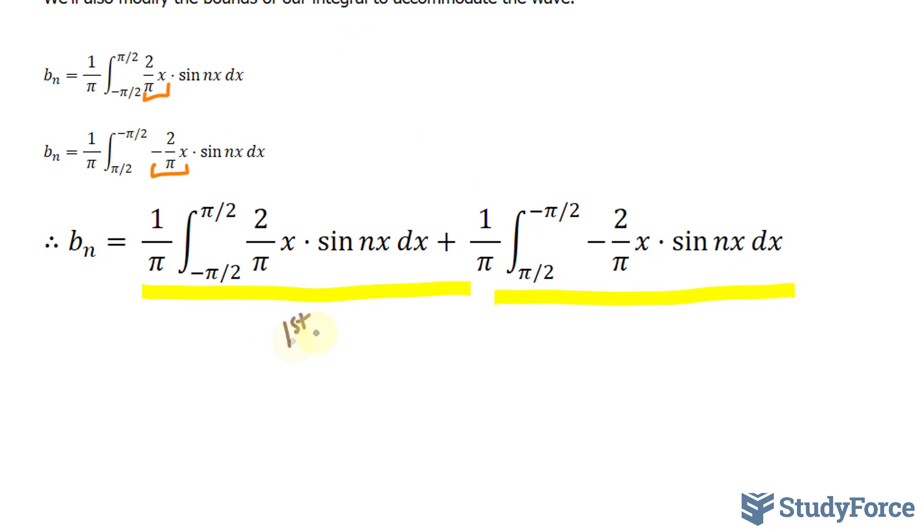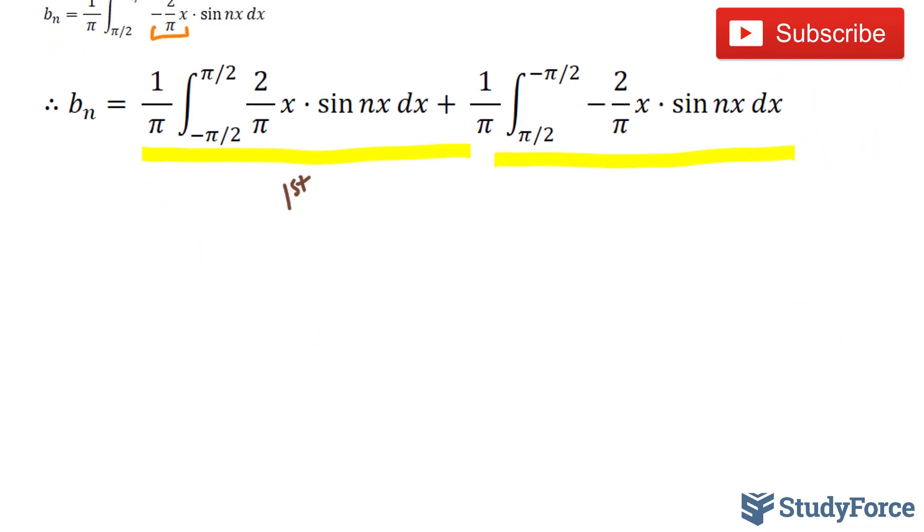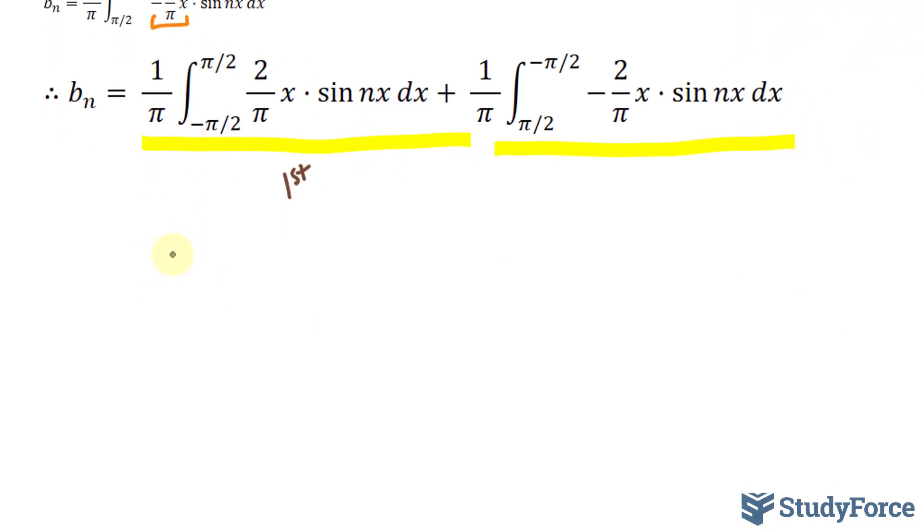I'll start with the first term. If you integrate this correctly, and recall that to integrate this function, you'll need to use integration by parts. I don't want to go through the whole process of integrating, so I have come up with the answer for you. The answer to this integral is 2(sin(nx) - nx·cos(nx)) / (π²n²). We need to evaluate this definite integral at π/2 and -π/2, these bounds. So we'll evaluate at the upper bound, then subtract from the function evaluated at the lower bound.